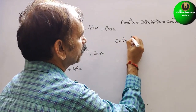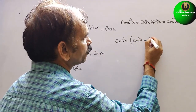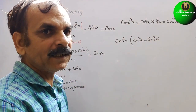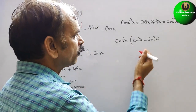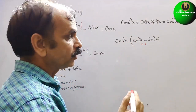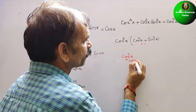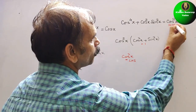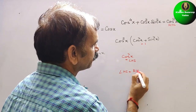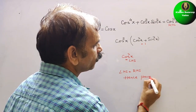Factoring out cos squared x, we get cos squared x times (cos squared x plus sin squared x). Since cos squared x plus sin squared x equals 1, we substitute 1 here, giving us cos squared x. So LHS equals RHS — hence proved.